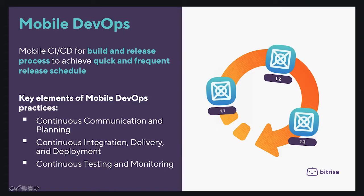Hi everyone and welcome back. In this video I will be talking about another challenge: the Mobile CI/CD and release train. Let's start with what is the meaning of CI/CD and how we can implement a release train to release our mobile apps. Mobile CI/CD is a build and release process to achieve quick and frequent release schedules, and it supports the mobile DevOps cycle.